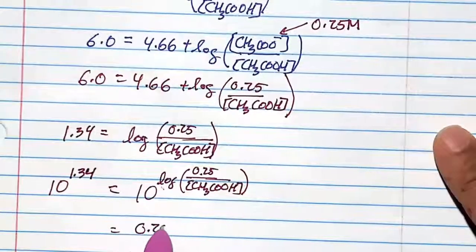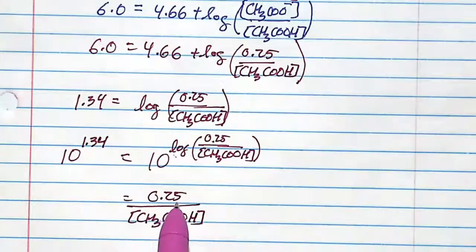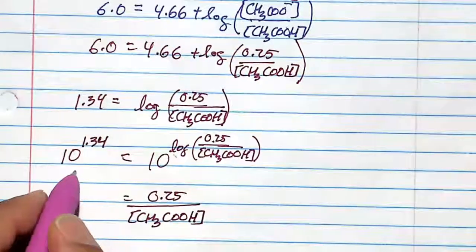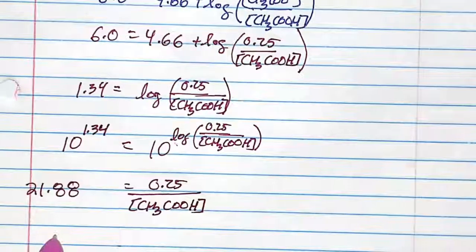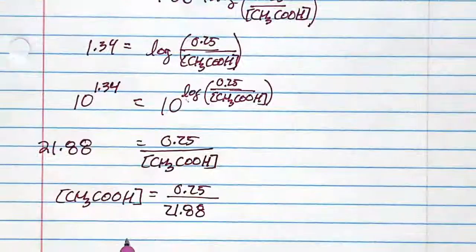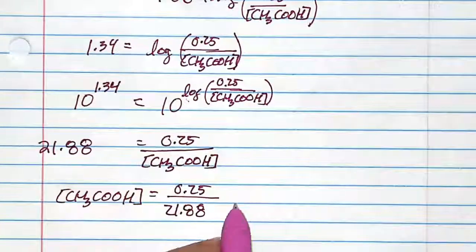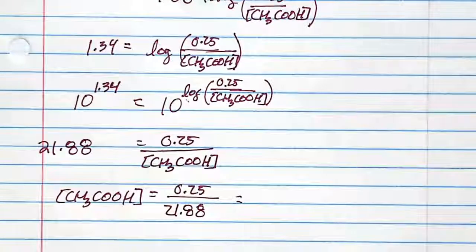So I have 0.25. This was given to us in the problem. And 10 to the power of 1.34 in my calculator. I'll solve for the acetic acid concentration. For the acetic acid concentration, I get a value of 0.011.